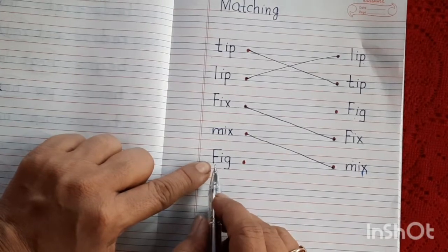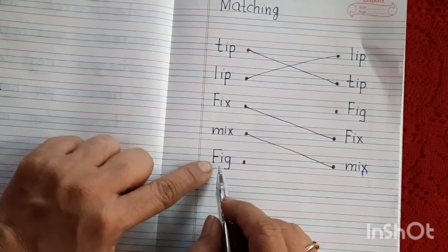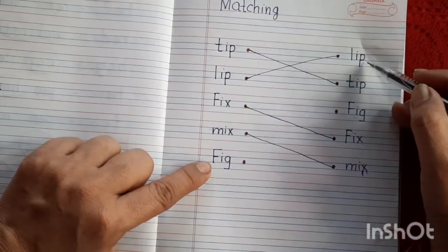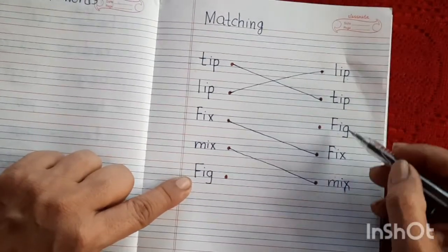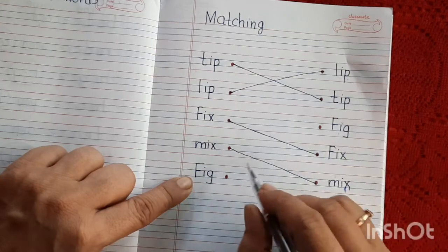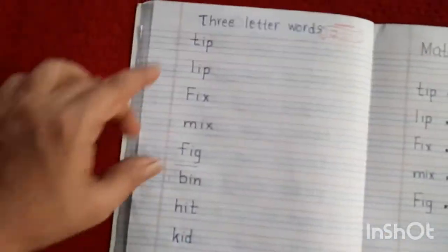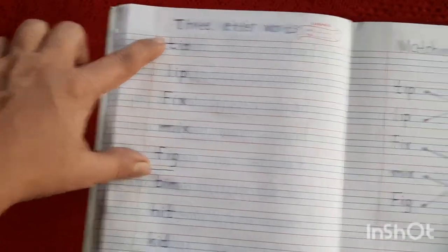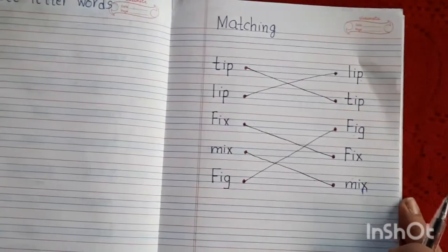Last word is F-I-G, fig. So let's find out word fig. Is it fig, no. Is it fig, no. Is it yes, this is a word fig, so let's match it. Okay, so after writing this word, do this exercise on new page. Okay, student?